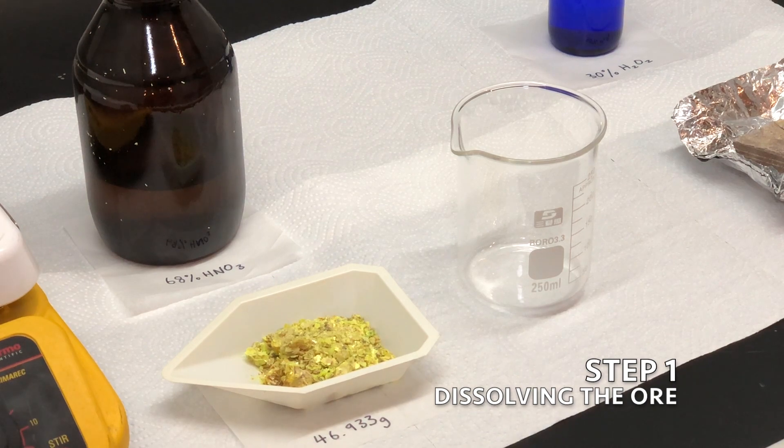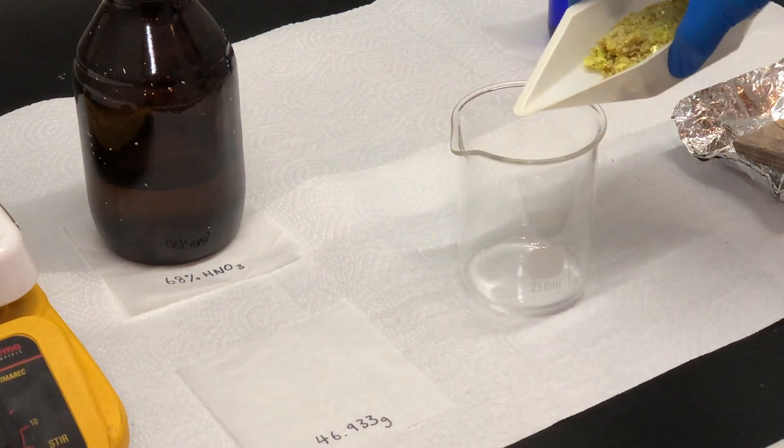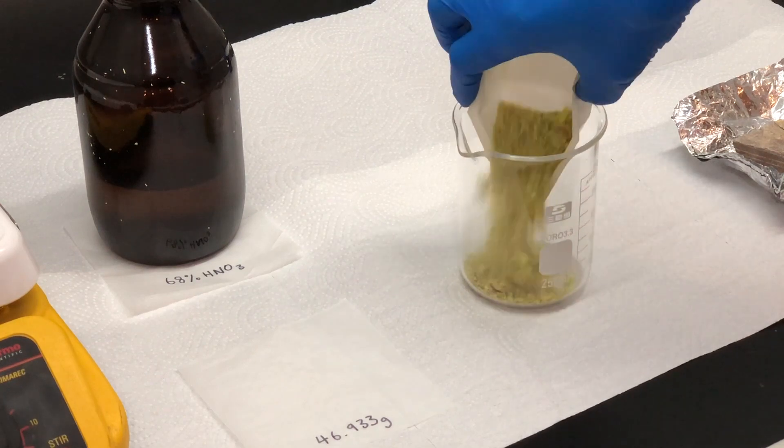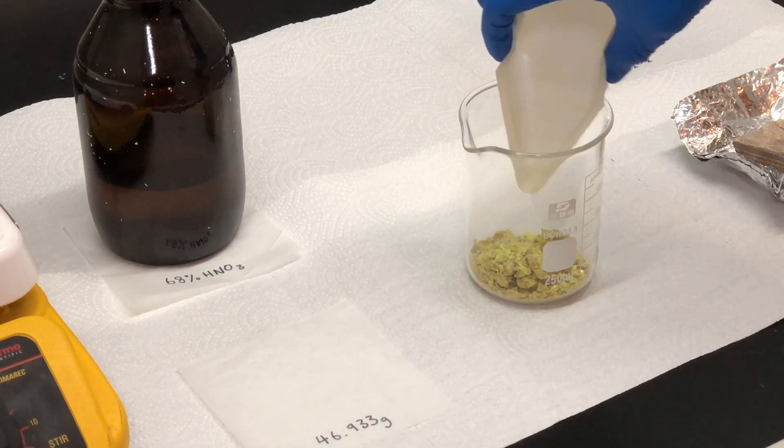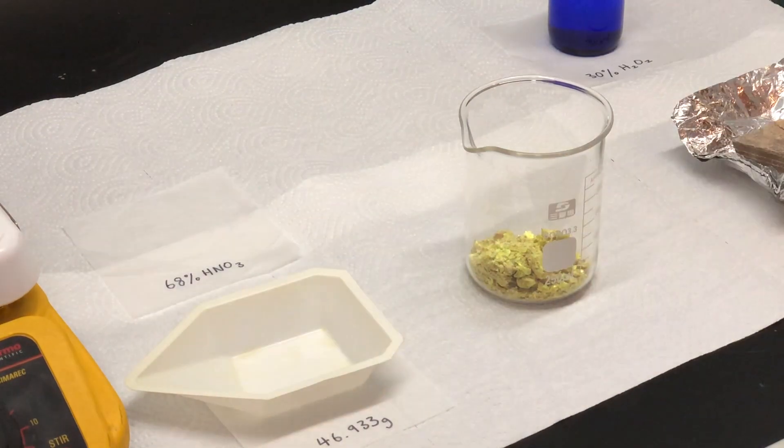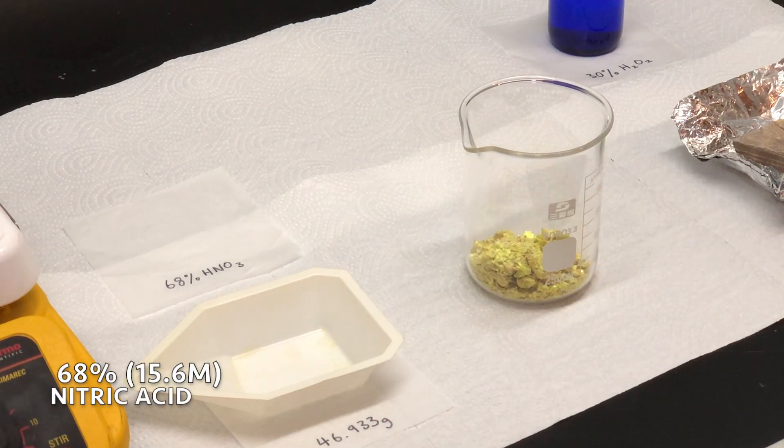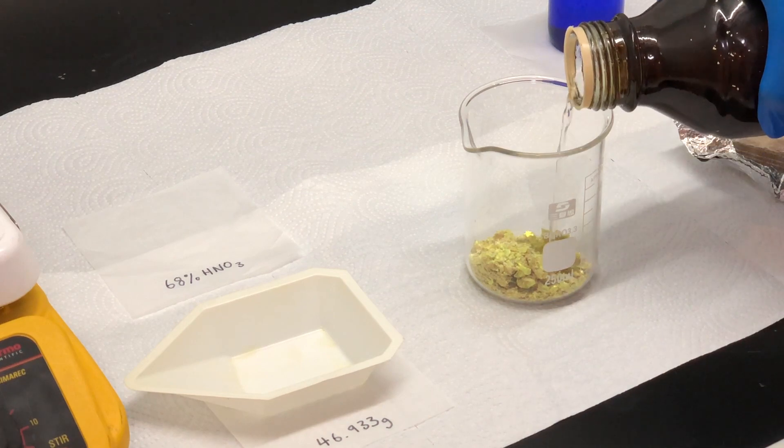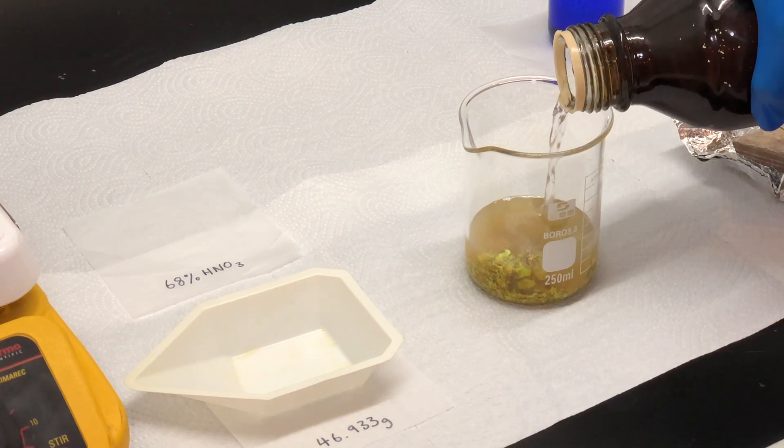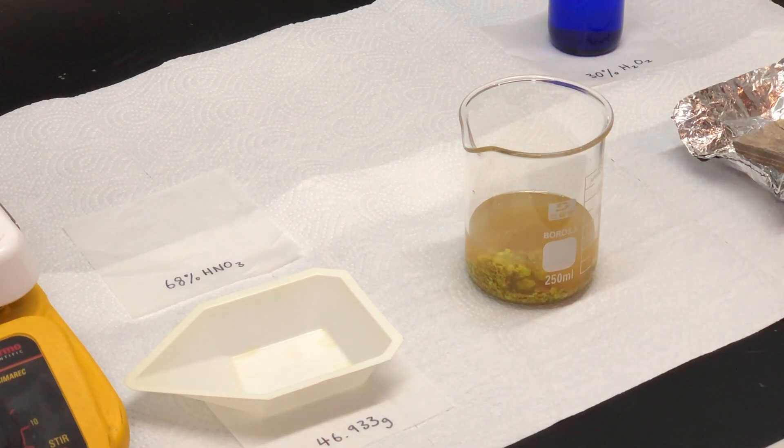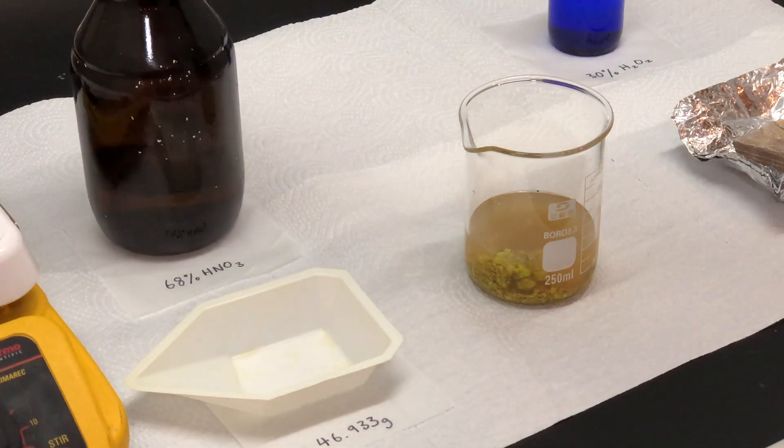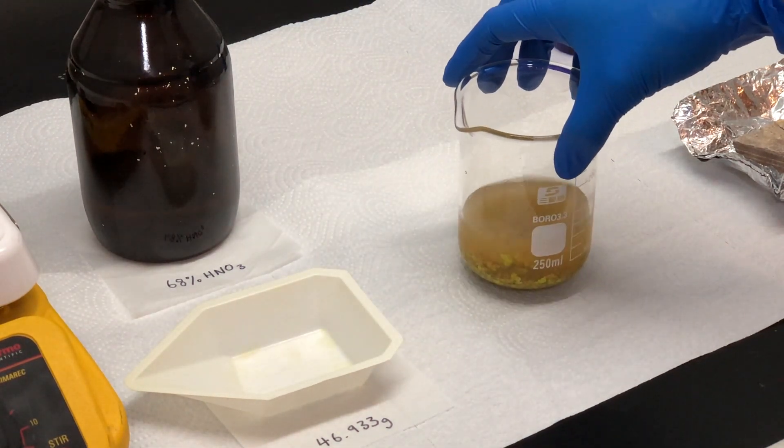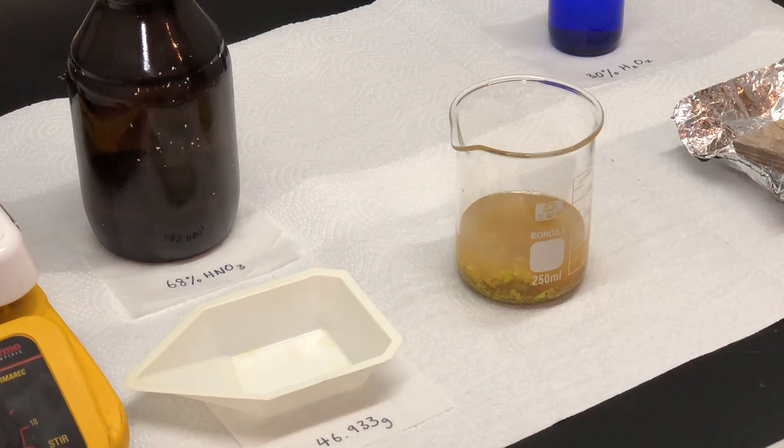Now we will move on to the actual separation. First, I'll transfer the autonite into a beaker. Then I'll pour in just enough concentrated nitric acid in order to react with all of the autonite. I'll let it sit for a while and wait for the uranium to be extracted from the ore.